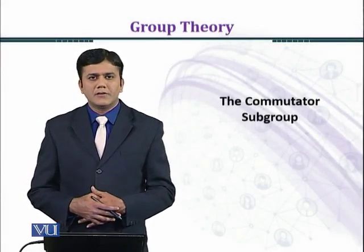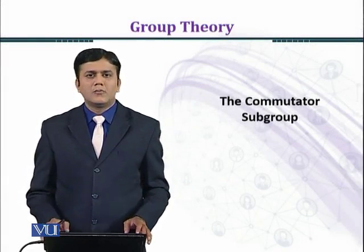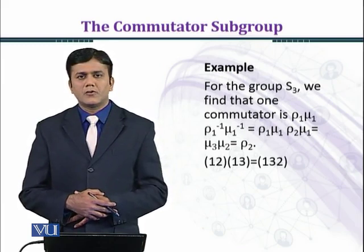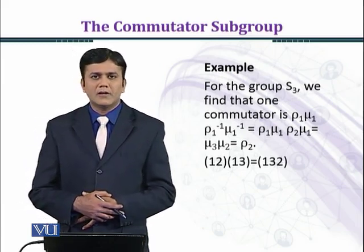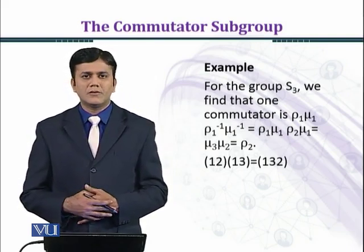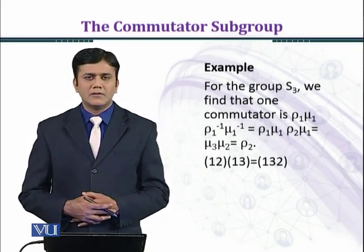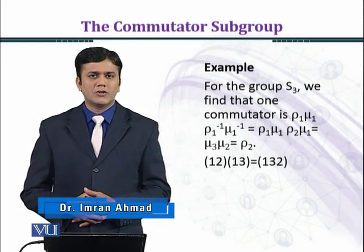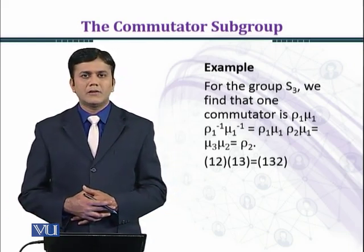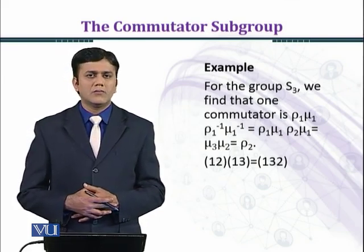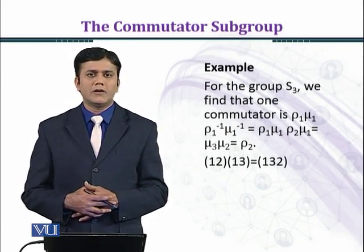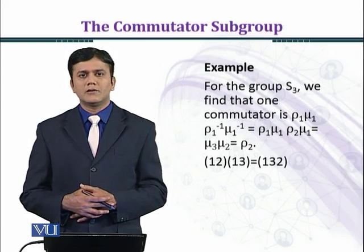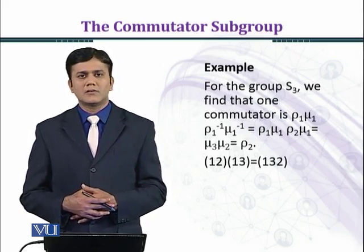In this module we shall discuss an interesting example on the commutator subgroup. Let's consider the symmetric group S3 on the set X = {1, 2, 3}, the group of all permutations on this set. There are six elements: rho0, rho1, rho2, mu1, mu2, mu3. rho0 is the identity permutation, rho1 is the cycle (1 2 3), rho2 is the cycle (3 1 2), mu1 fixes 1 with cycle (2 3), mu2 is cycle (1 3), and mu3 is cycle (1 2).